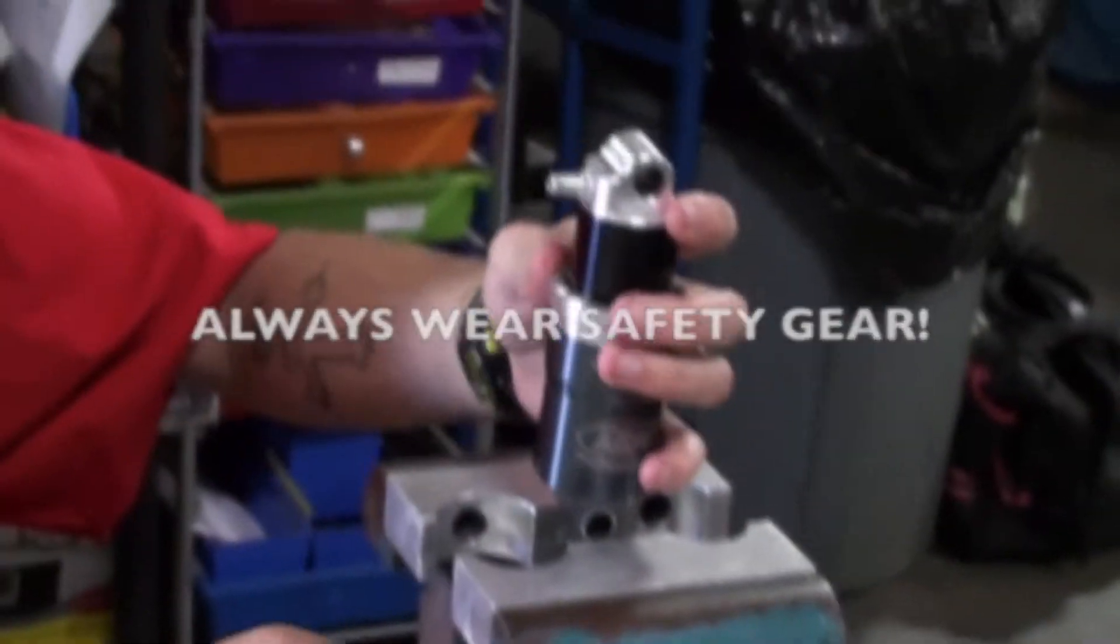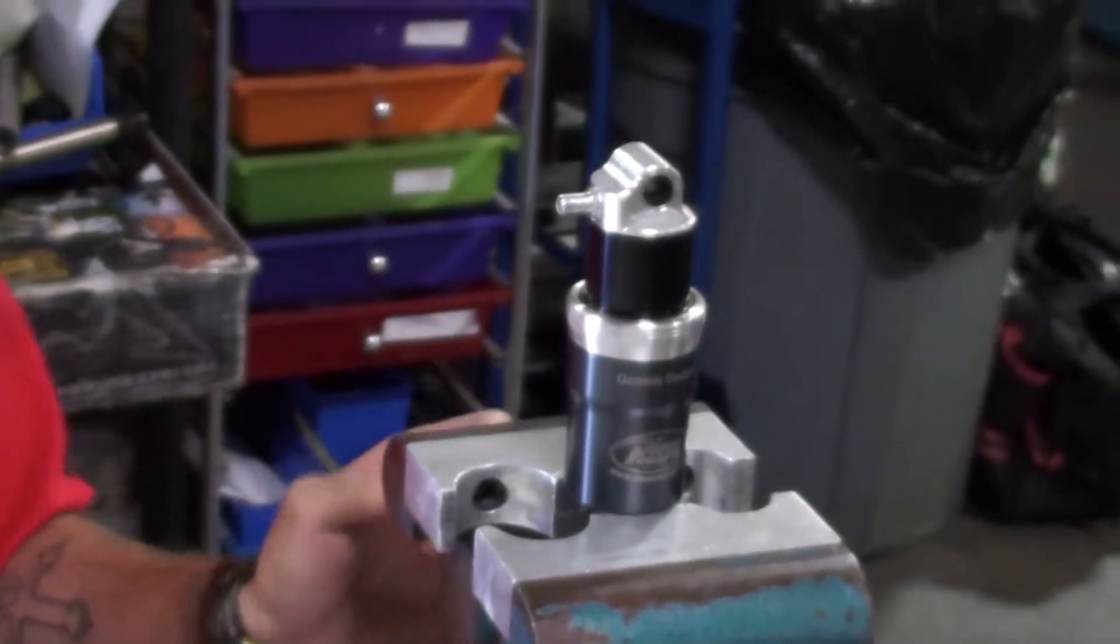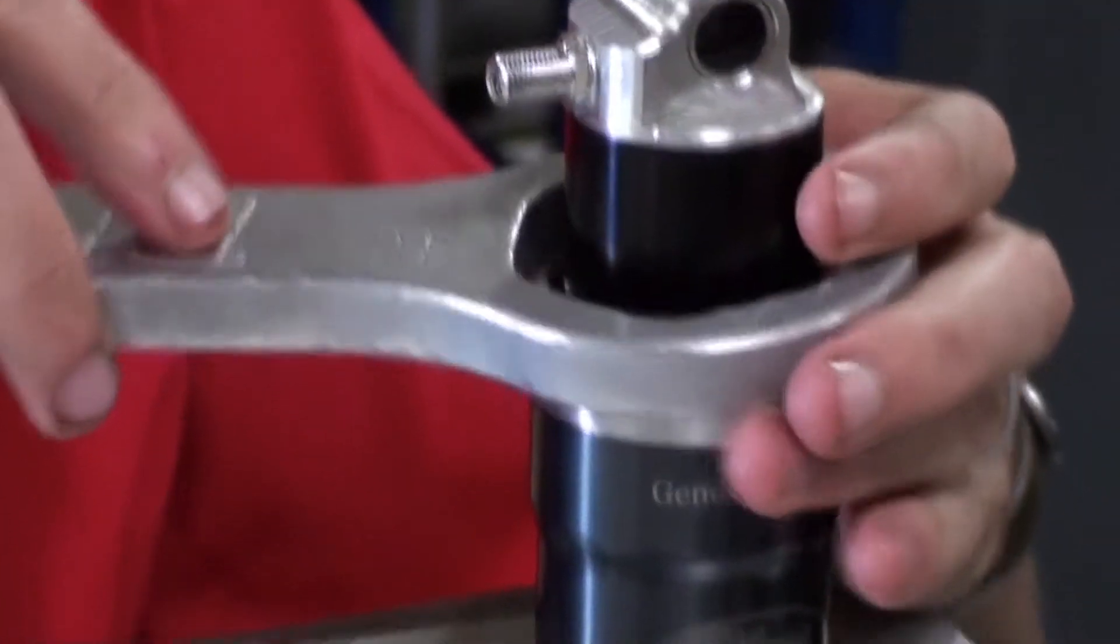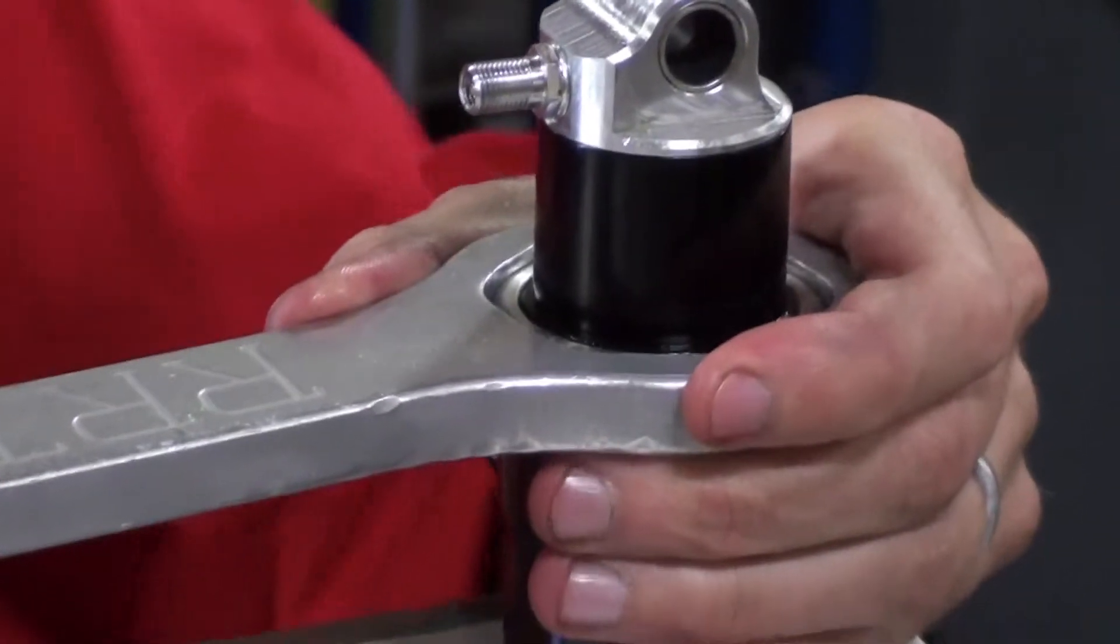Place it in your vise, body eyelet down. Use either a large crescent wrench or a Rissi Racing bearing tool. Unscrew the bearing.